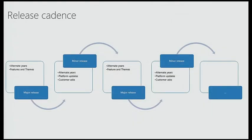Starting with release cadence: Vivek mentioned in the keynote that we'll have an incremental release model with a major release every two years and a minor release every two years, alternating. BizTalk Server 2013 was a major release, so expect a minor release next year — currently called BizTalk Server 2013 R2, planned for H1 of next year. The cycle then continues with another major then minor. In minor releases we focus on platform adoption and select specific themes; in major releases we go after big features and big scenarios.